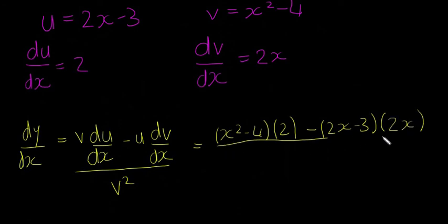all divided by v squared, so x squared minus 4, all squared. And we're just going to leave that bottom bit, because you don't need to work it out, you can just leave it the way it is, and that's fine.